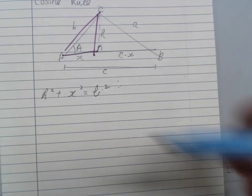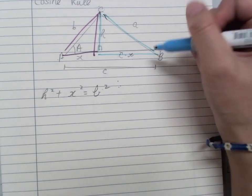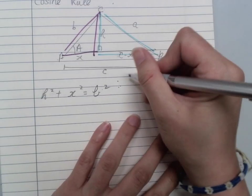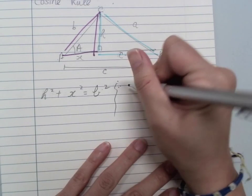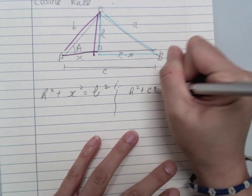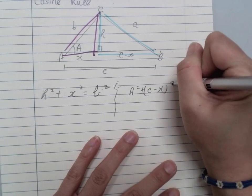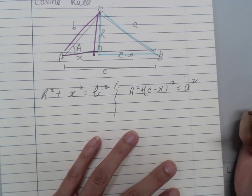And then I will look at the other side of the triangle. I will have X² + (C - X)² = A², right?